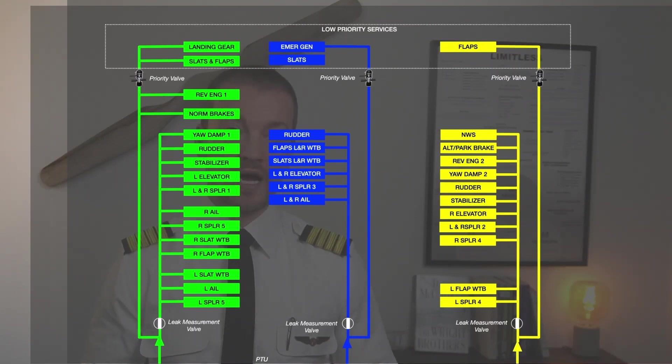And at the bottom you are able to see the leak measuring valves, which, as we discussed, will automatically close should there be a leak detected in either of the lines.